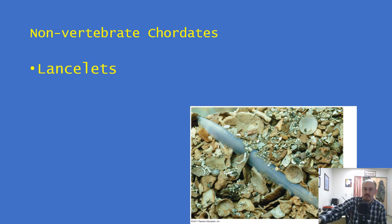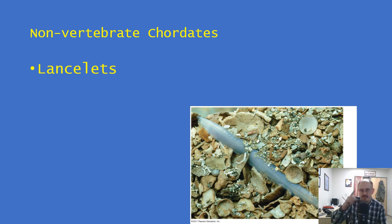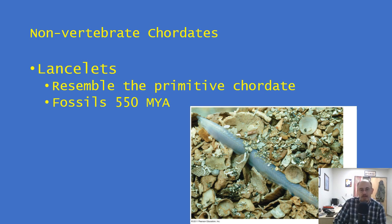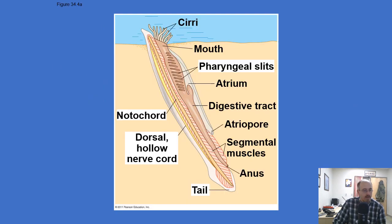Nonvertebrate chordates — let's start at the very bottom of the chordate tree: the lancelets. This group doesn't look like much; they're buried in the ocean usually with their heads sticking out. They resemble what we think of as the most basic chordate — basically, all they really have are those major chordate features. Their fossils go way back in time to the Paleozoic. They have a post-anal tail, a dorsal hollow nerve cord, a notochord, pharyngeal slits — all the things we'd expect to see.